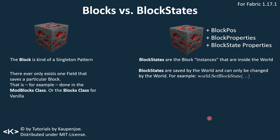When it comes to block states, those are instances inside of the world. They save things like the block position — where is this block located — and block properties, which is what we pass in when actually creating the block. And then also block state properties, which are different from block properties. These are the things that change — like 'powered' or 'lit' for the redstone ore we just saw.